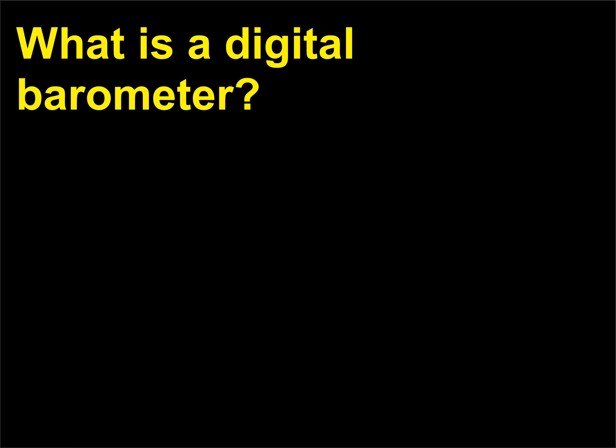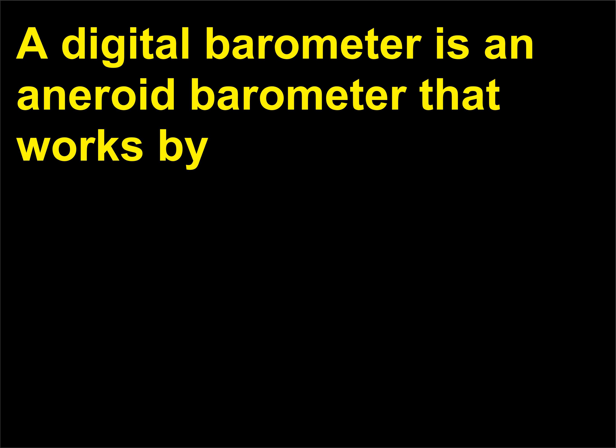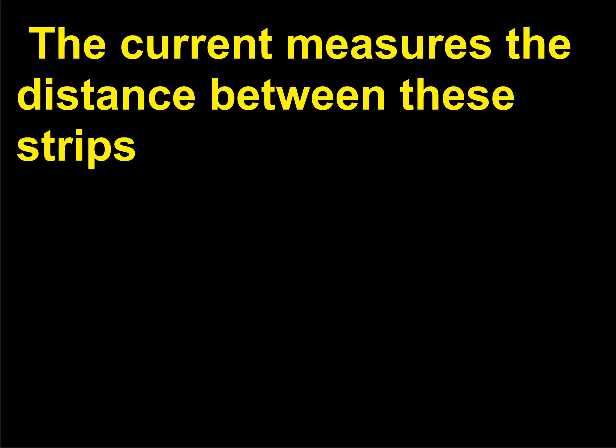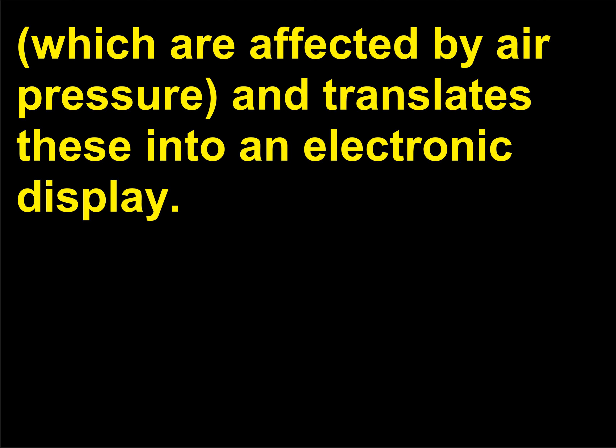What is a digital barometer? A digital barometer is an aneroid barometer that works by running an electrical current between two strips of metal. The current measures the distance between these strips, which are affected by air pressure, and translates these into an electronic display.